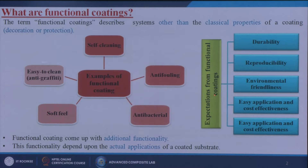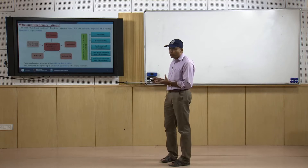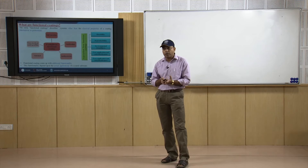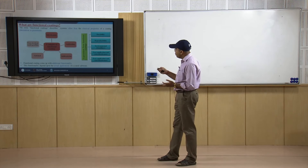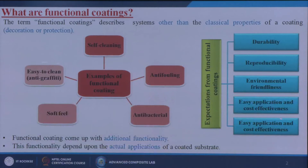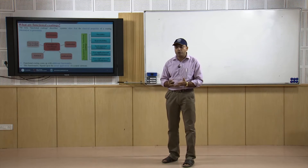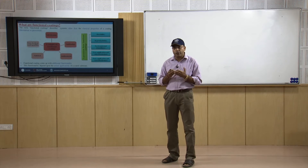What are the expectations from functional coatings — why are we doing this kind of coating? The five main properties we seek are: durability, reproducibility, environmental friendliness, easy application, and cost effectiveness. These are the five main properties for which we pursue functional coatings.